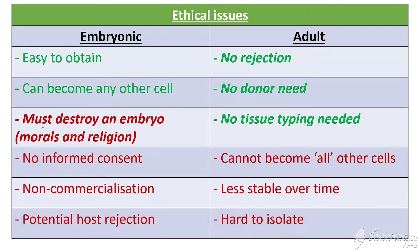The spec specifically calls out one key point: a problem with embryonic stem cells is that you must destroy an embryo to obtain them, which has moral and religious implications. The other issues — consent, commercialisation, rejection — are useful for a longer six-mark exam answer, but if you only remember one point, remember that one.